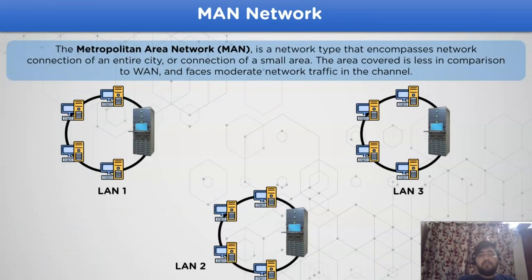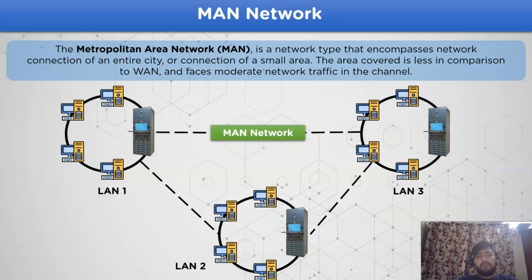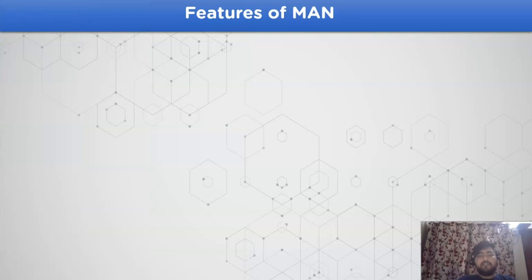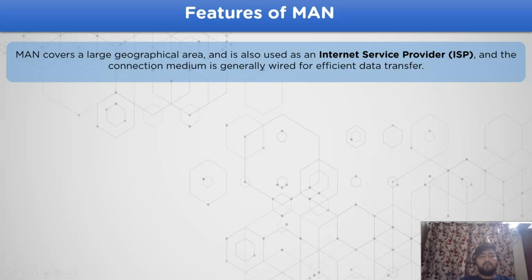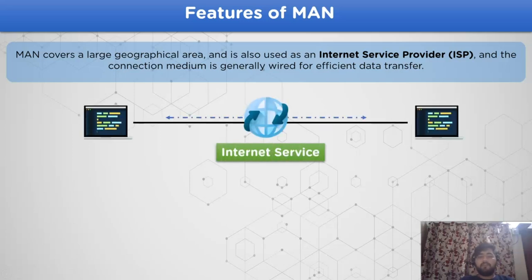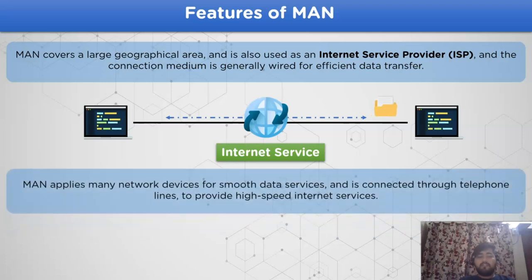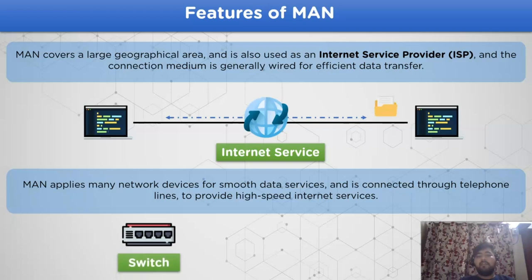The Metropolitan Area Network, or MAN, is a network type that encompasses the network connection of an entire city or a small area in a country. The area covered is less than WAN and faces moderate network traffic due to the large location it covers. Data exchange occurs from one LAN network to another. MAN covers a large geographical area and is used as an internet service provider by many local services, providing high data transmission rates. It applies many network devices for smooth data services and is connected through telephone lines using wired medium.